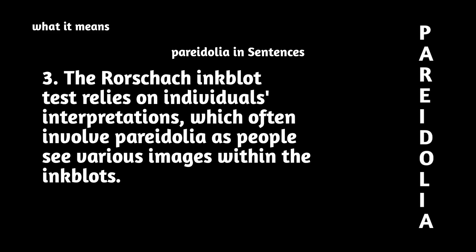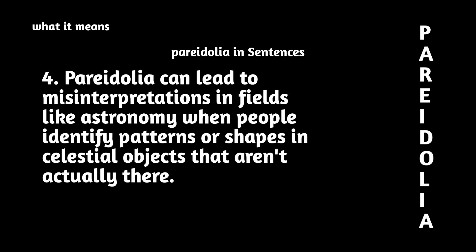3. The Rorschach inkblot test relies on individuals' interpretations, which often involve pareidolia as people see various images within the inkblots. 4. Pareidolia can lead to misinterpretations in fields like astronomy, when people identify patterns or shapes in celestial objects that aren't actually there.